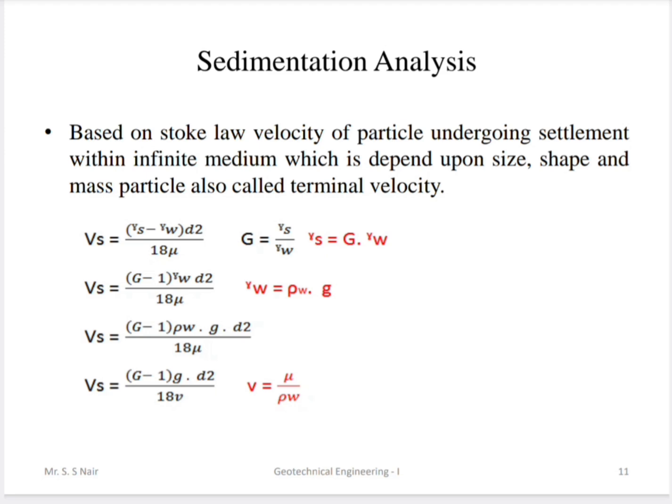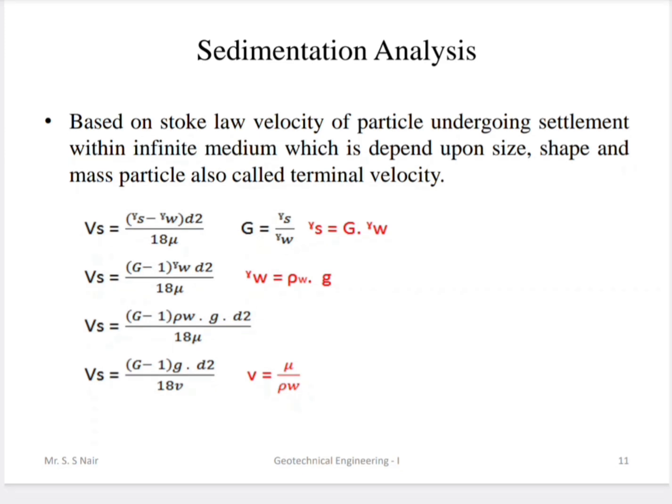Sedimentation analysis is based on Stokes' Law, which gives the velocity of a particle settling within an infinite medium, depending on the size, shape, and mass of the particle — called terminal velocity. The formula is: Vs = (G − 1) × g × D² / 18μ, where G is specific gravity, g is gravitational acceleration, D is the diameter of the particle, and μ is the viscosity of the fluid.